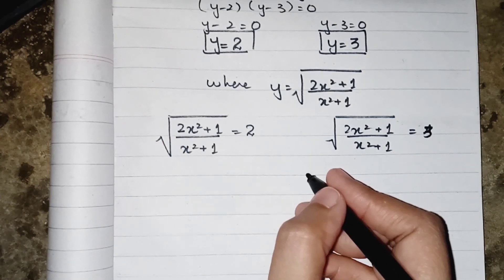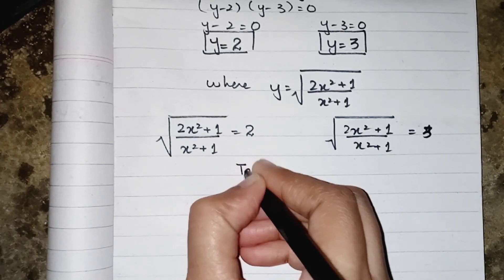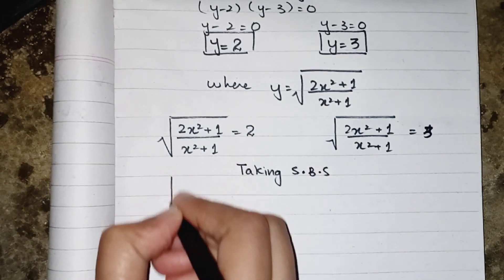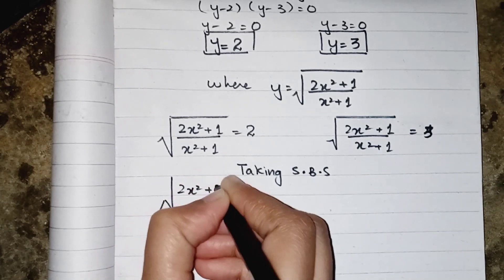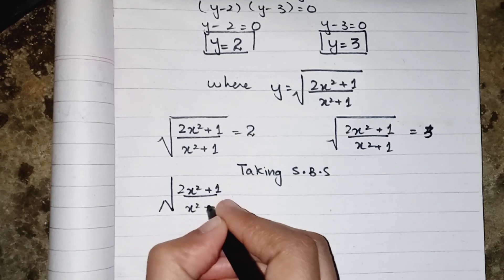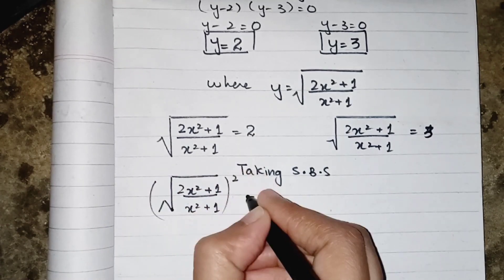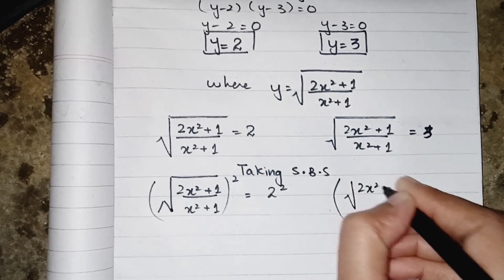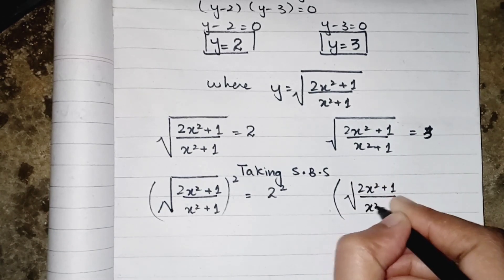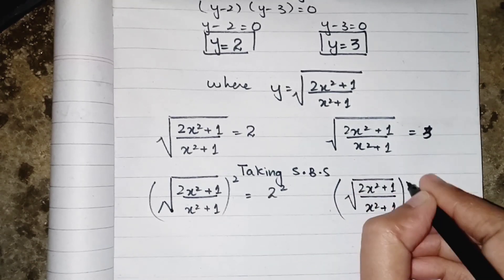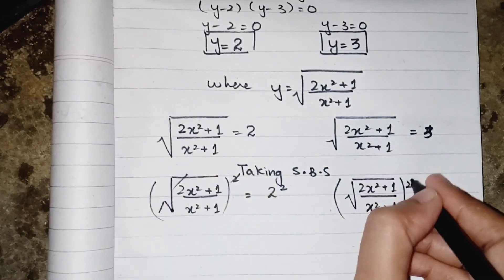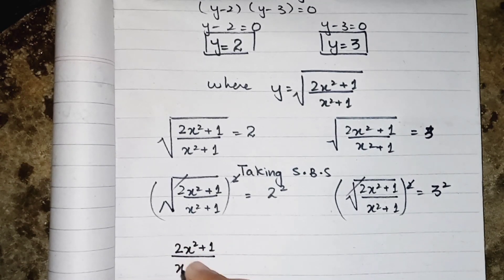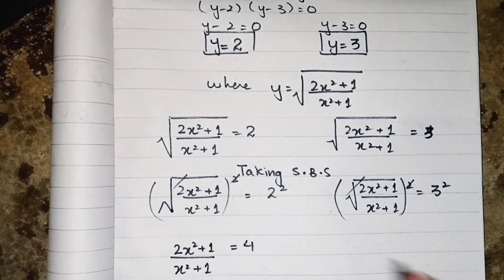To remove the square root, we square both sides. After squaring, the root and square cancel, giving (2x²+1)/(x²+1) = 4 for the first case (y = 2), since 2² = 4.